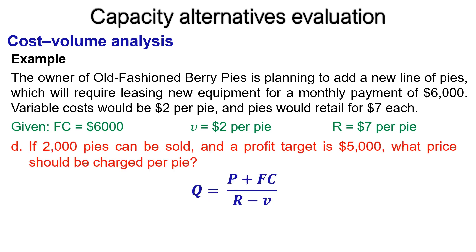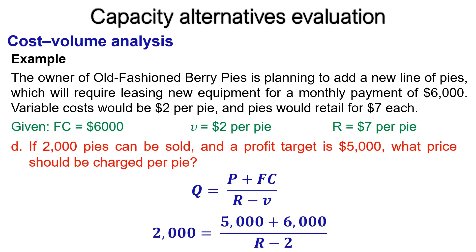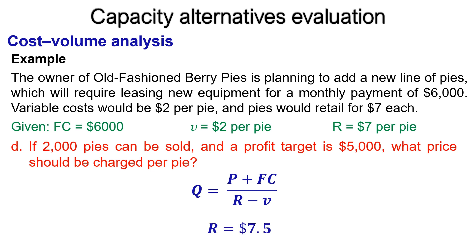The last question is to find the pie price, R, if they sell 2,000 pies and aim to obtain a $5,000 profit. Using the same formula and substituting: 2,000 = (5,000 + 6,000) ÷ (R − 2). Solving for R gives R = $7.50. So, to sell 2,000 pies and obtain a $5,000 profit, the pie price has to be $7.50.